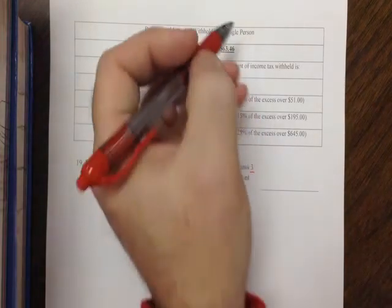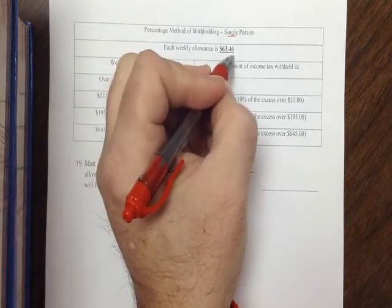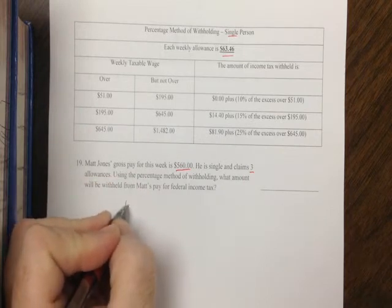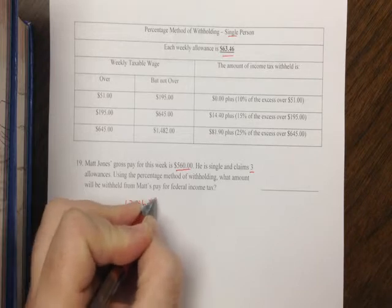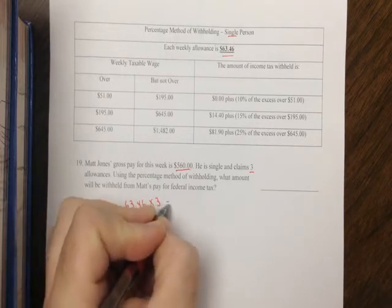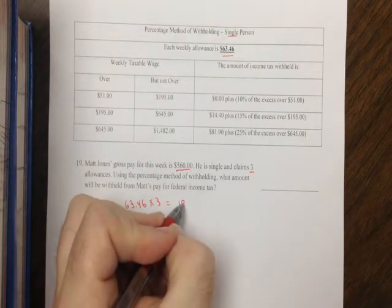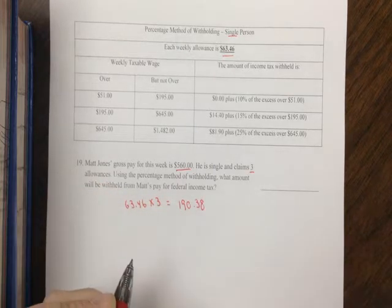Now note, this chart is for single people, and the number of allowances times $63.46. So you take $63.46 times 3. I come up with $190.38. That is the allowance for the week.